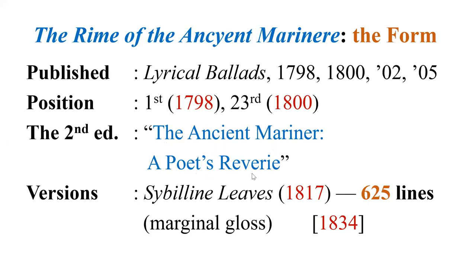In the second edition, Coleridge changed the title to 'The Ancient Mariner: A Poet's Reverie' — a kind of dream subtitle. Then he came up with his own version published in Sibylline Leaves in 1817, which had 625 lines, and this is the version we are going to look at today. For this version, Coleridge also added marginal gloss — kind of glossary comments. The last version by Coleridge was 1834.